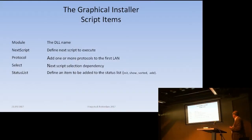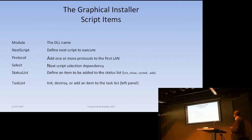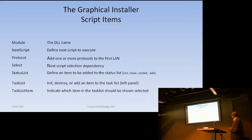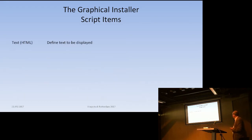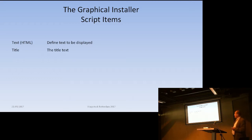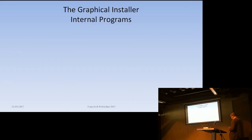The 'task list' refers to the left-hand panel and which item is highlighted. 'Text' is what I talked about. 'Title' just gives the title text so on the page you know what's supposed to be happening. And that's basically all the script commands.